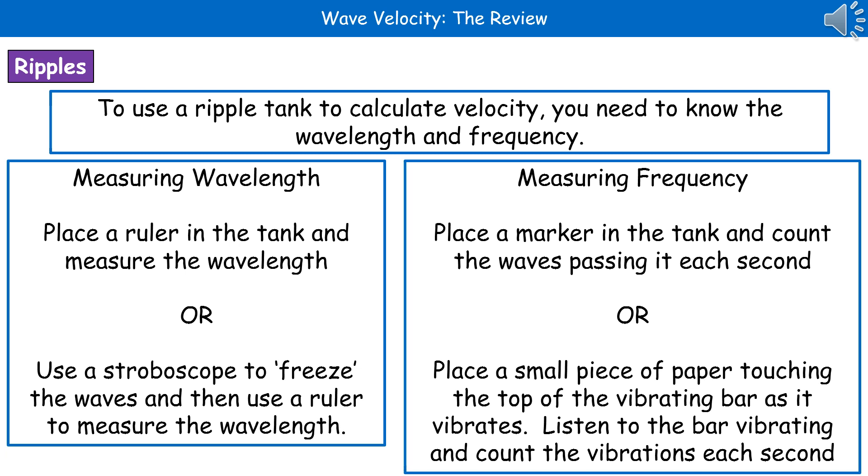As we mentioned previously, we can use a ripple tank to model these different wave items. What we can actually do using our ripple tank is calculate velocity, but in order to do that we need to know the wavelength and the frequency of the wave we're looking at.